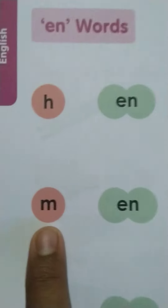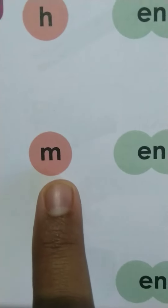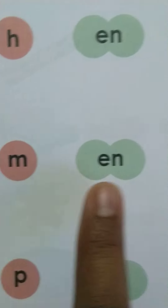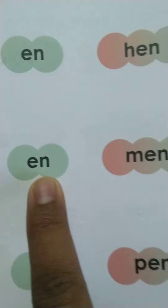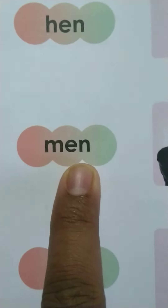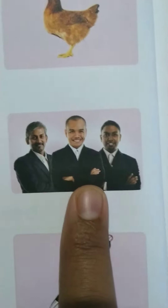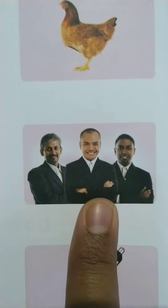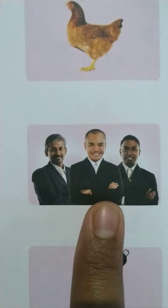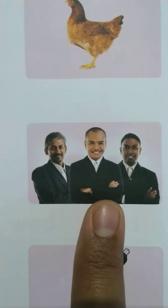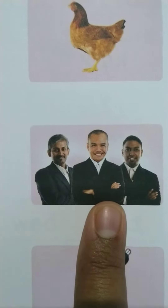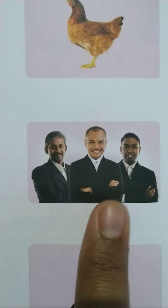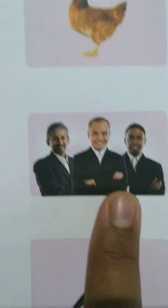Next is M, E, N: men. Together here, M, E, N — men. This is a picture of men. Men is a word used for many men.